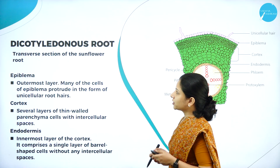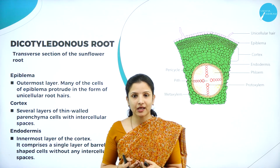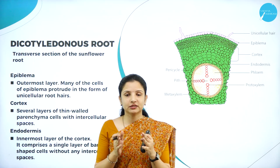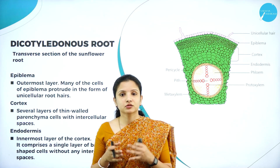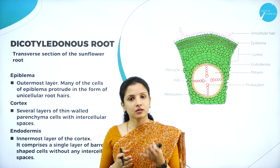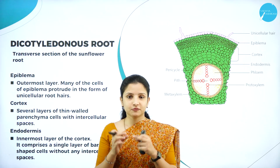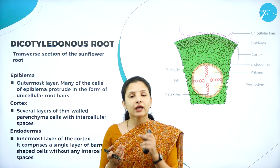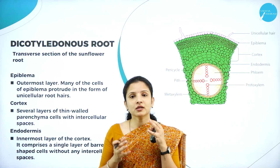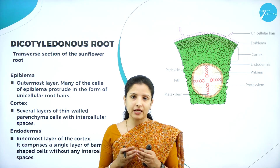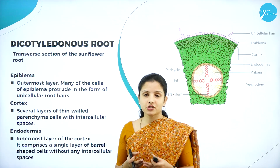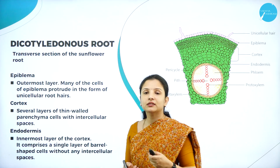Beginning with the dicotyledonous root — dicotyledonous plants are those having seeds which bear two cotyledons. One of the major differences is the venation of leaves: dicotyledonous plants usually have reticulate venation, whereas monocotyledon plants have parallel venation. However, if a slide contains a transverse section of the root, you can still identify it as dicot or monocot based on the arrangement of cells inside the plant tissue. Here, a transverse section of the sunflower root is used, as sunflower is a dicotyledonous plant.